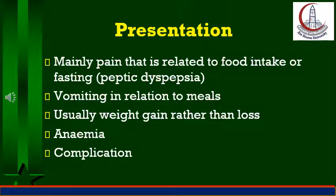70% to 90% of gastrinomas are present in a triangular area called the gastrinoma triangle. The first angle is at the junction of the second and third parts of the duodenum. The second angle is at the junction of the cystic duct and common bile duct. The third angle is at the pancreatic neck.